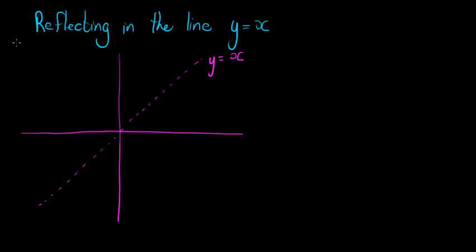What would the transformation rule look like if I take any point and reflect it in the line y = x? I measure the perpendicular distance to the line and then translate that distance to the other side — perpendicular again — and plot the new point. What would the coordinates of that new point be? To prove it I'm going to drop lines down and show that those distances are the same using two triangles.